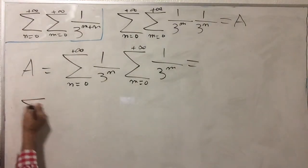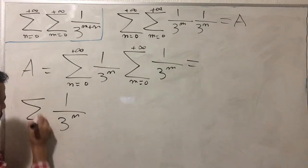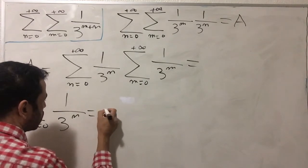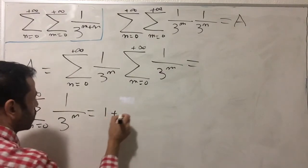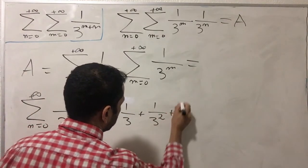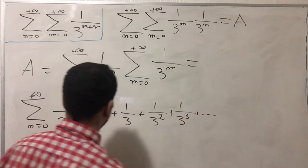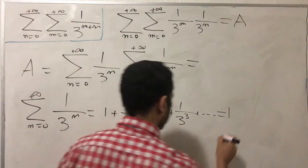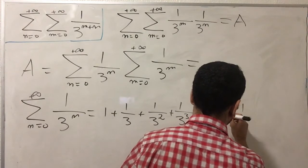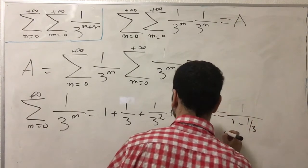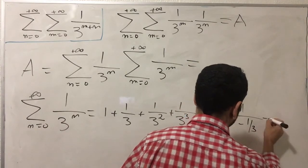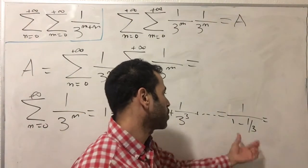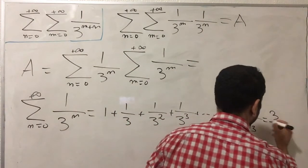Both sums are in the form of geometric series, so I can calculate each separately. The sum of 1 over 3 to the n as n goes from zero to plus infinity gives us 1 plus 1/3 plus 1/9 and so on. The first term is 1, so this equals 1 over (1 minus 1/3), which is 1 over 2/3, giving us 3/2.